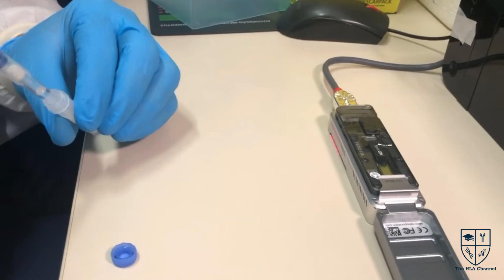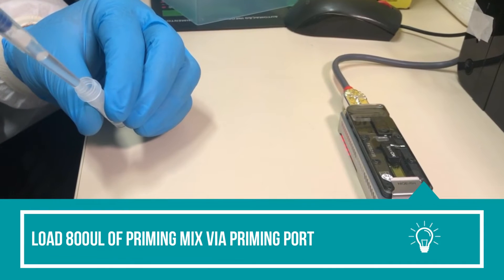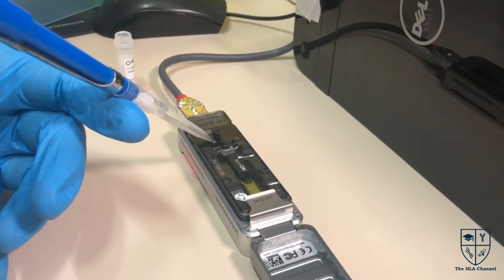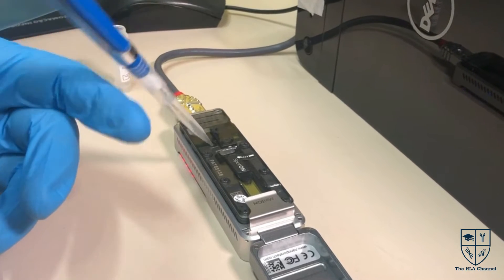Take the reserved priming mix. Load 800 microliters of the prepared priming mix into the flow cell via the priming port, avoiding introduction of air bubbles.